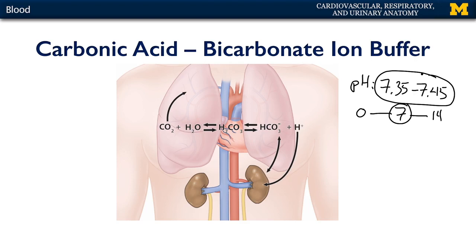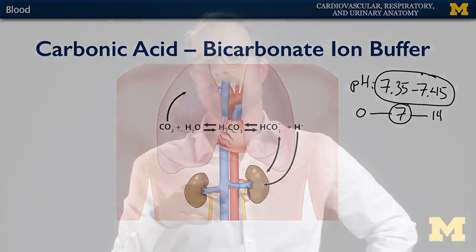The carbonic acid bicarbonate ion buffer system resists changes in pH such that we can stay close to the limits of 7.35 to 7.45. Importantly, this system works not only within the blood and even within a red blood cell, but it can also work in concert with other organs. This concept is what allows us to tie together lessons about the cardiovascular system, the respiratory system, and the renal system.